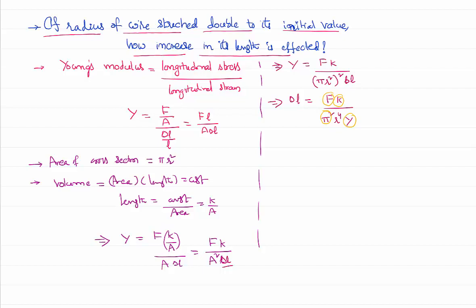Pi squared is constant, k is of course constant. Assuming we have applied a constant force, not a variable force, taking all that into consideration, you will get your delta L directly proportional to 1 by r to the power 4, as all the other terms are constants.